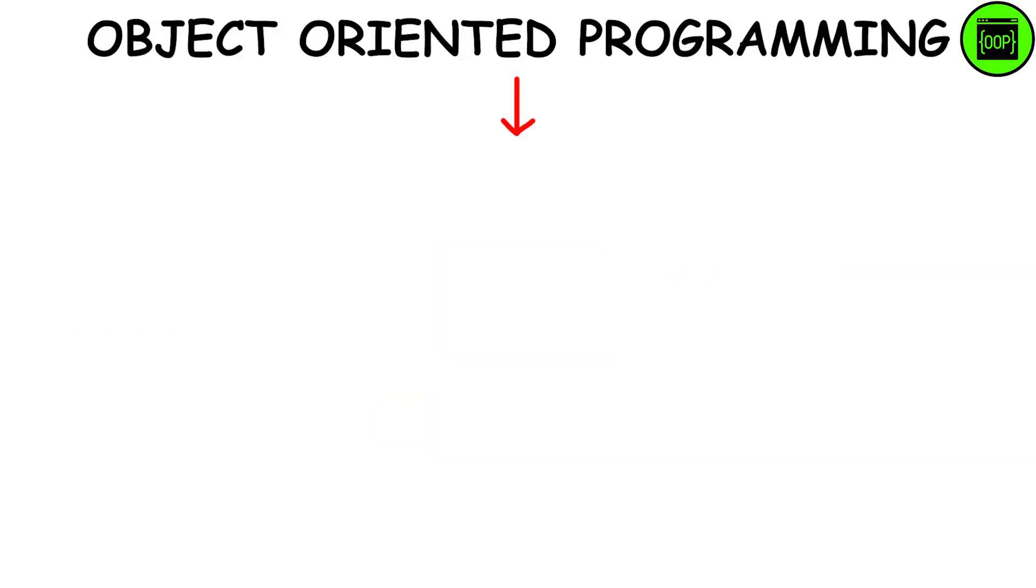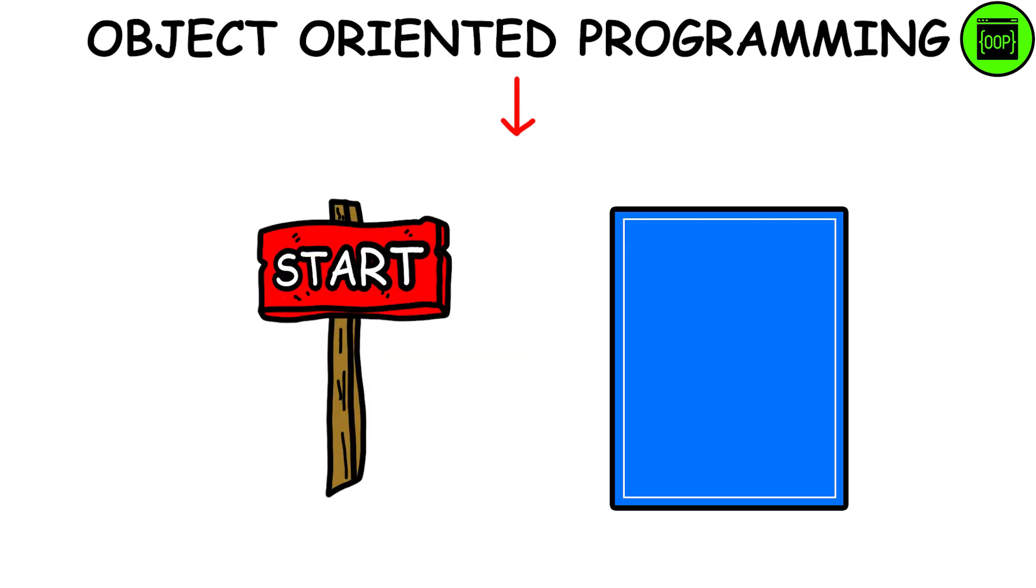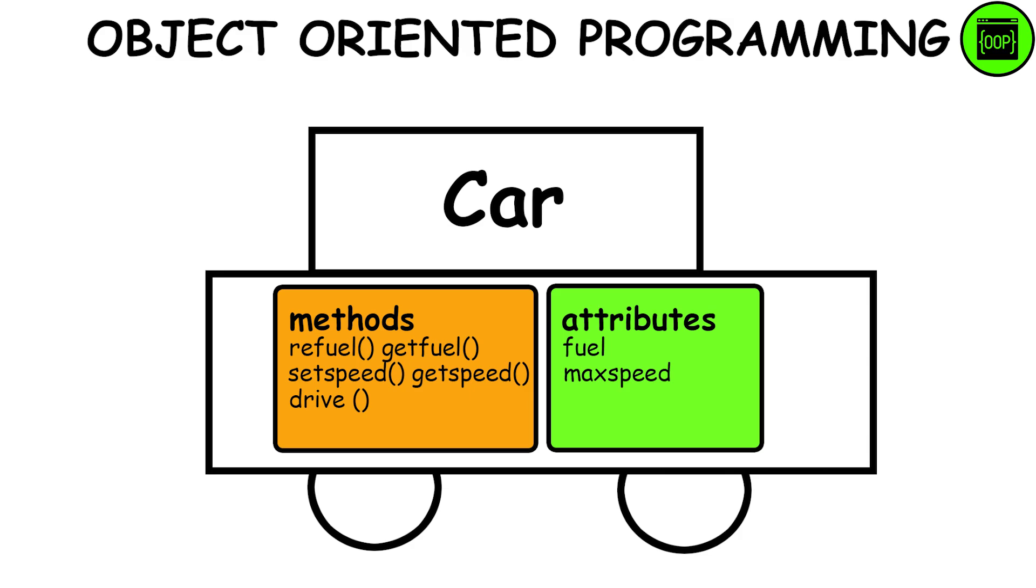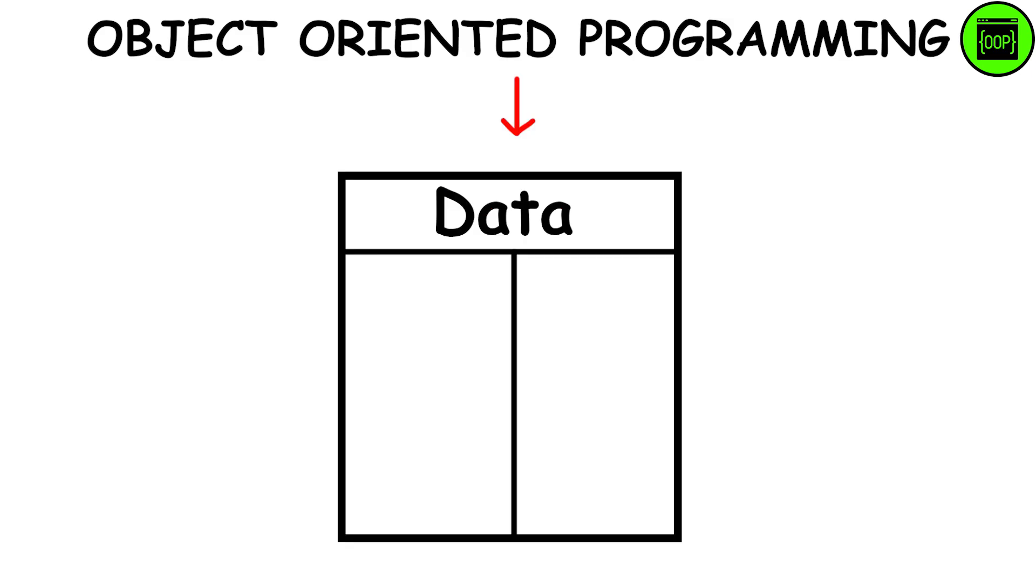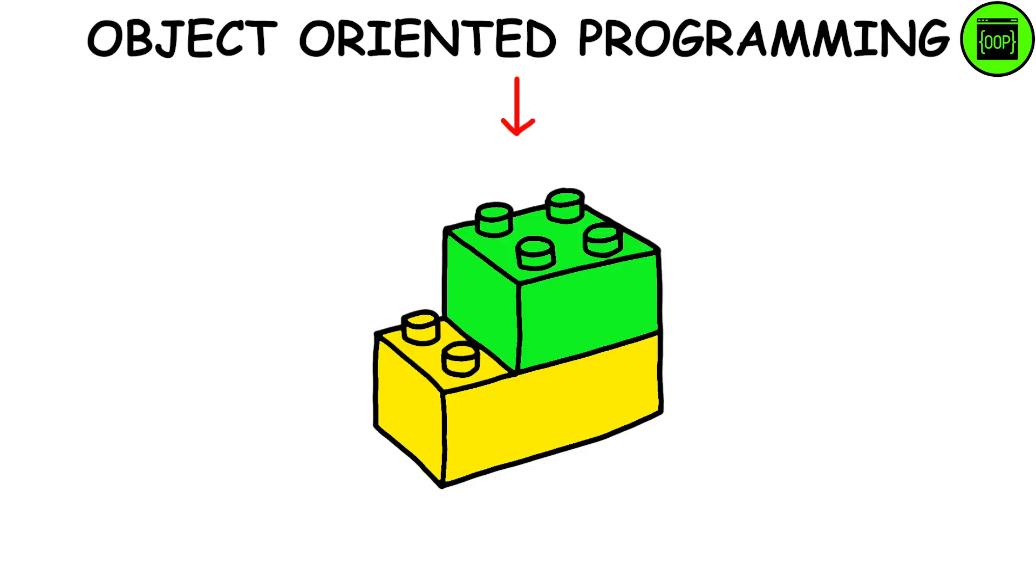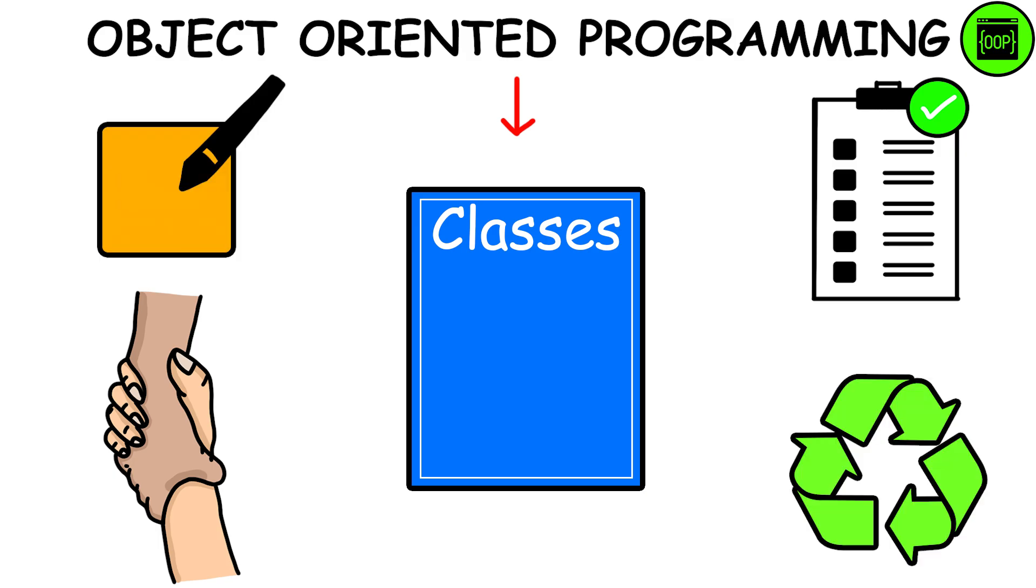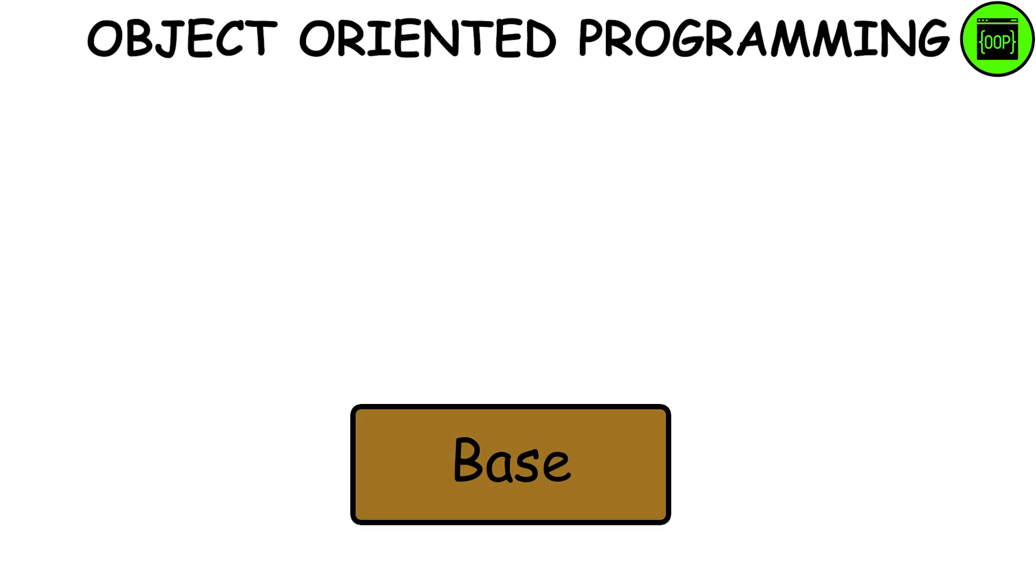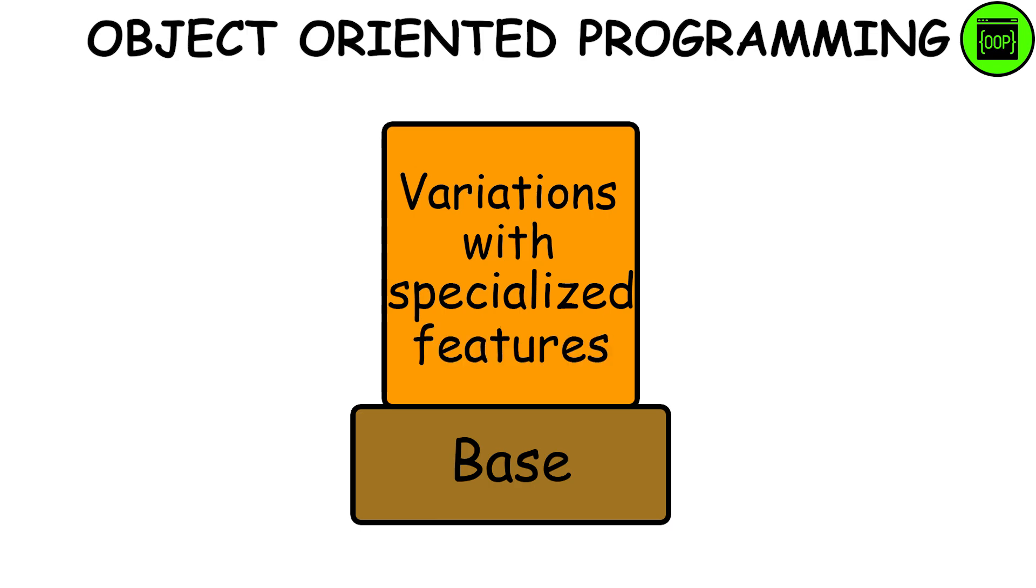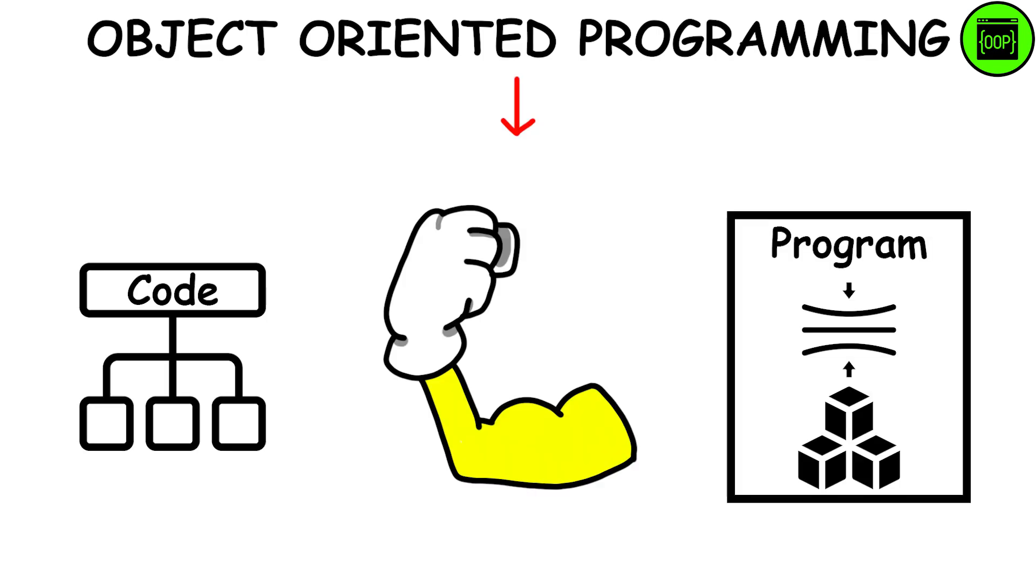Object Oriented Programming is like building with Lego blocks. You start by creating blueprints called classes, which define the structure and behavior of objects. These objects are like individual Lego pieces. They contain both data, like color or size, and behaviors like how they connect to other pieces. Classes help keep your code organized and make it easier to reuse and modify. Plus, they support inheritance, so you can create new classes, called subclasses, that inherit characteristics from existing ones. It's like building on top of a base model to create variations with specialized features. OOP is a powerful way to structure your code and create flexible, modular programs.